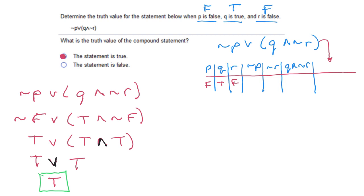To summarize the steps: p is false, q is true, r is false. I negated false to get true for not p, and negated false to get true for not r. Then the conjunction of true and true gave true. Finally, the disjunction of true and true gave true, so the final statement is true.